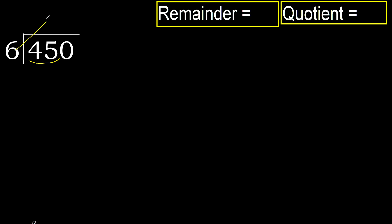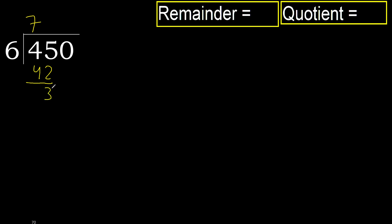6 multiplied by which number is nearest to 45 but not greater? 6 multiplied by 8 is 48, which is greater. 6 multiplied by 7 is 42, which is not greater. Subtract: 45 minus 42 equals 3.